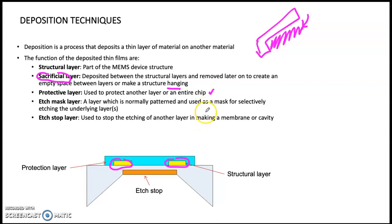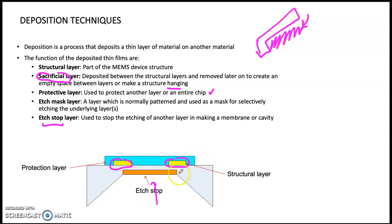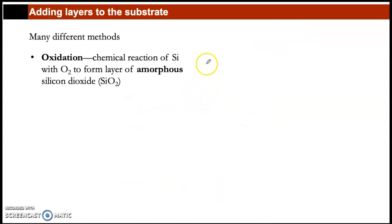The protection layer protects the entire chip during packaging. When we etch, we need to stop somewhere — that's what the etch-stop layer does. It is placed inside an etching solution to define where etching stops and to create a membrane or cavity. The last is the etch-mask layer, used to define the pattern during etching.